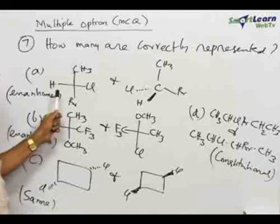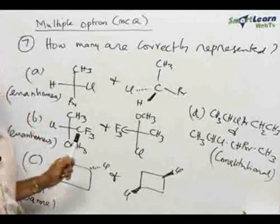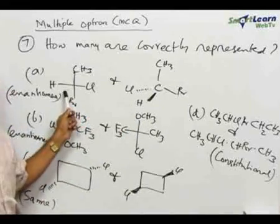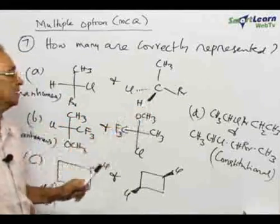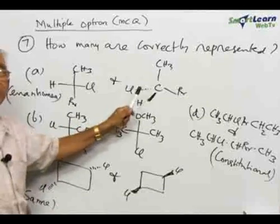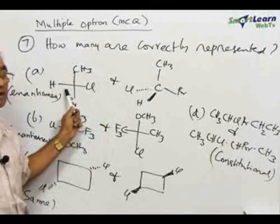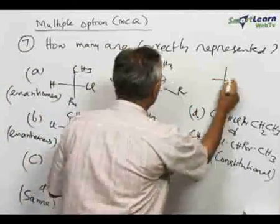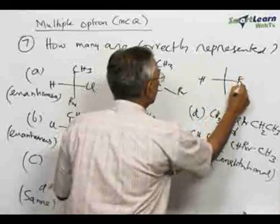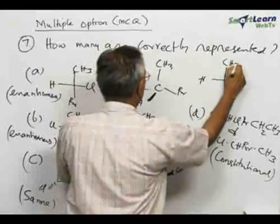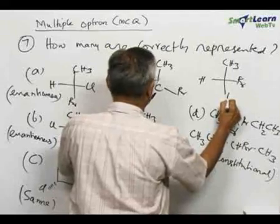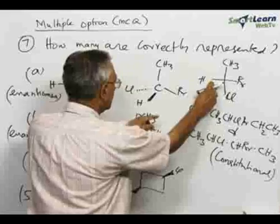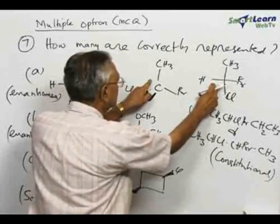We start with the first pair, which has been marked as enantiomers. We are not able to decide immediately because one is in the Fischer projection and the other is in the wedge projection. Therefore, we will have to convert — it is easier to convert a wedge projection to a Fischer projection. We bring the hydrogen here, bromine here, CH3 here, and Cl here. This gives the corresponding Fischer projection for that structure.